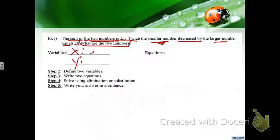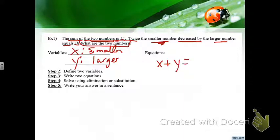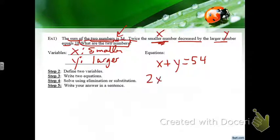X is my smaller number and Y is my larger number. The sum of two numbers: smaller plus larger equals 54. Twice the smaller — 2X — decreased by the larger, Y, equals 18.